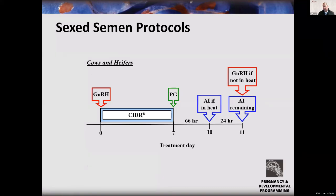Similarly, for cows and heifers — again largely from the University of Missouri group — a shorter seven-day CIDR protocol with GnRH up front, prostaglandin and CIDR removal, and Estrotec patches attached: at 66 hours later, AI anything in heat, then 24 hours after that, run everything not yet AI'd, administer GnRH, and AI those animals. This split-time approach works well with sexed semen.